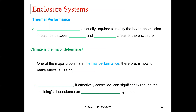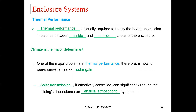In terms of thermal performance, it is usually required to rectify the heat transmission imbalance between inside and outside areas of the enclosure, where the climate is a major determinant. One of the major problems in thermal performance is how to make effective use of the solar gain. This is becoming very popular for multiple facilities moving toward green building design. If solar transmission is effectively controlled, it can significantly reduce the building's dependence on artificial atmosphere systems such as HVAC systems.